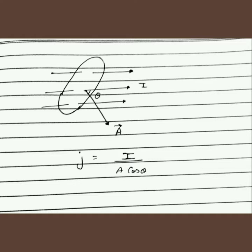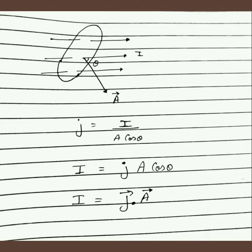Current density J ka formula is I upon A cos theta. The cos theta comes from the dot product, giving us: current I equals J vector dot A vector.